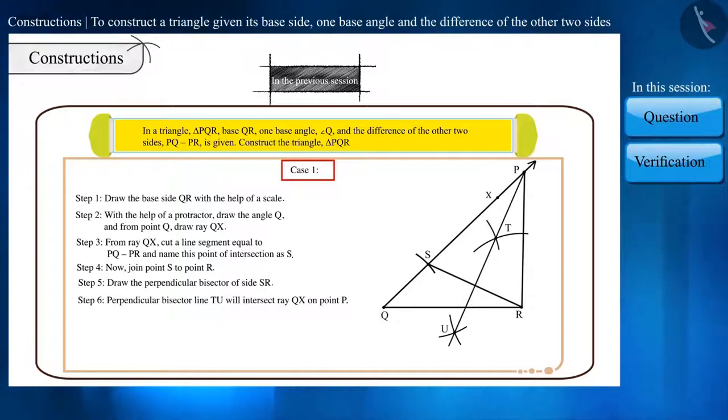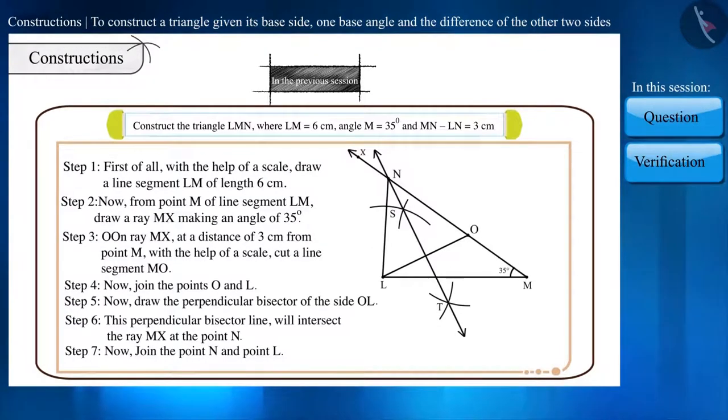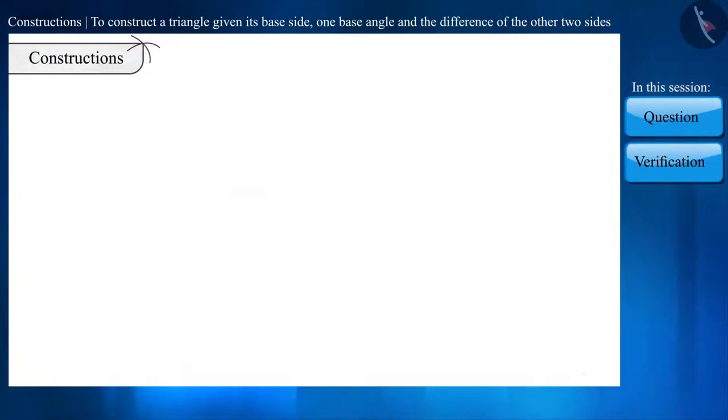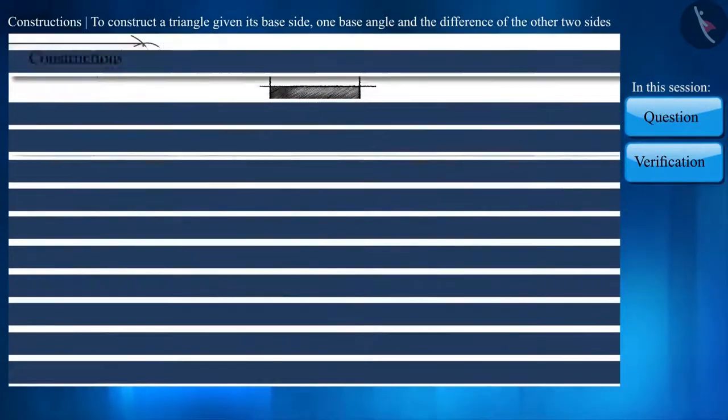Case 1, when the side formed on the base angle is greater than the other side. And case 2, when the side formed on the base angle is smaller than the other side. And we did some construction based on case 1. In this session, we will learn to construct a triangle based on case 2.